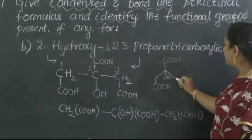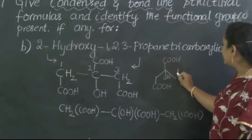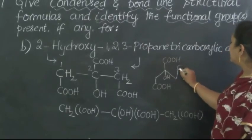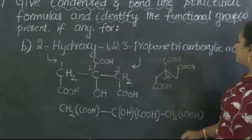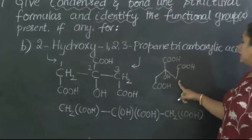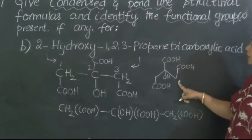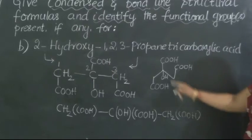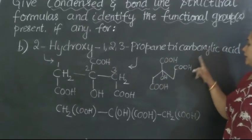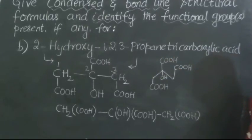And what is this third carbon atom containing? This is also in turn linked with another COOH. Therefore, this is the bond line formula of this structure: 2-hydroxy-1,2,3-propane-tricarboxylic acid.